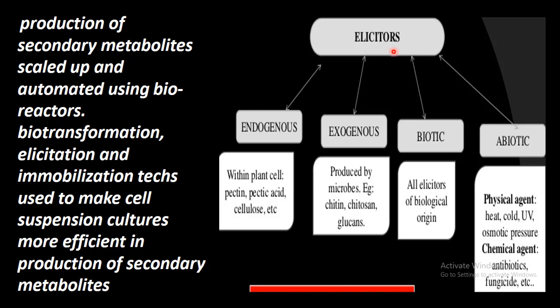Elicitation: what is elicitation? Elicitors are certain enzymes and chemicals present in plants that stimulate secondary metabolite production. Endogenous elicitors are present within the plant cell — these include pectin, pectic acid, and cellulose.